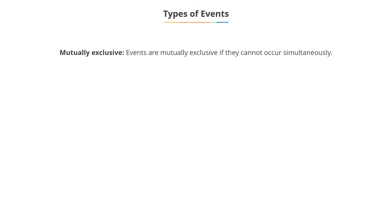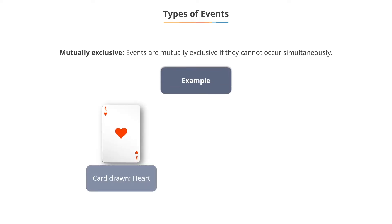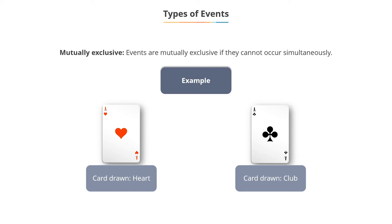Events are said to be mutually exclusive if they cannot occur simultaneously. The events that a card drawn at random is a heart and a card drawn at random is a club are mutually exclusive.